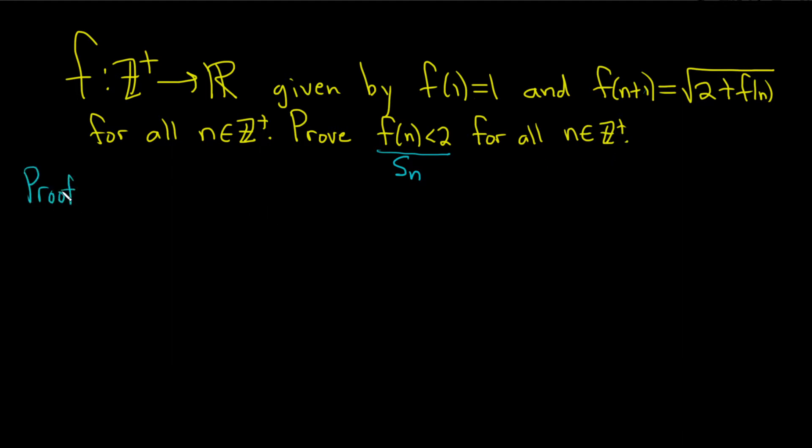Proof. The first step in an induction proof is the base case. In the base case you show that your statement is true for the smallest positive integer that you're working with. So here we're working with all positive integers, so the smallest positive integer is 1. We need to show that our statement is true when n equals 1. So by definition we have that f(1) is equal to 1. So let's write that down: f(1) equals 1.